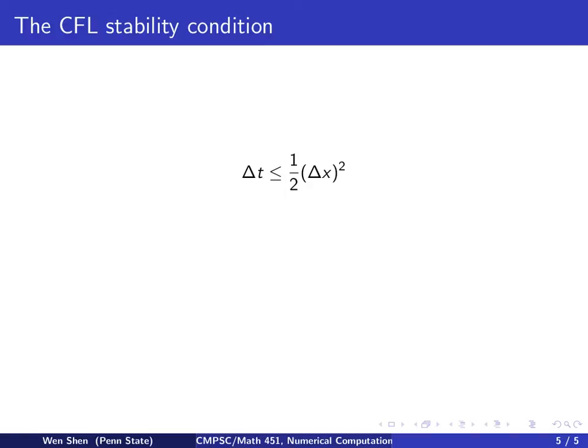Let's revisit the CFL stability condition. It says that if now Δt is less than equal to a half times Δx squared, then I have the discrete maximum principle.